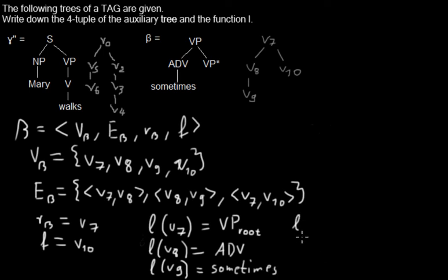And we want to know the label of V_10. This one is the footnote in this tree. So the label is, in this case, VP ADJ for adjoin. So that's the subscript that's telling that this is a footnote which plays a role in adjunction. And these are the quadruple and the function L for an auxiliary tree.